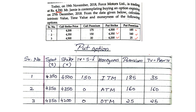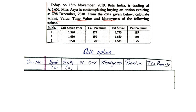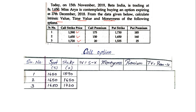Now the second question. Today on 15th November 2019, Bata India is trading at 1650 — that's our spot. Missaria is contemplating buying an option expiring on 20th December. From the data given, calculate intrinsic value, time value, and moneyness. They give call strike price, call premium, put strike price, and put premium. We'll start with the call option part again. The table remains the same — serial numbers 1, 2, 3. Spot is 1650 in all cases. Strike prices are 1590, 1650, and 1720.